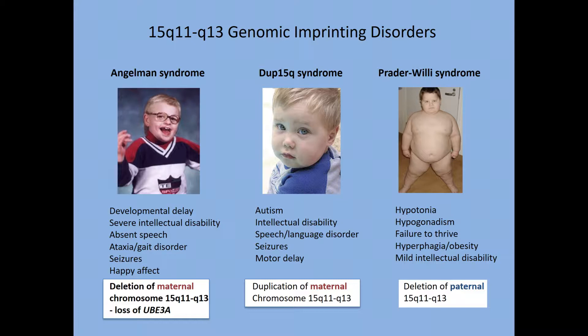We know that with Angelman syndrome, it's specifically the loss of UBE3A that's responsible for more or less the entire syndrome. With 15Q syndrome, we have duplication of that same region. Since it is a maternal inheritance, we think UBE3A probably plays an important role, but it is not clear yet what contributing roles other duplicated genes in the region may play. And Prader-Willi syndrome is due to deletion on the paternal region.